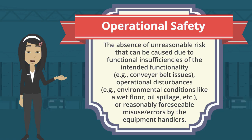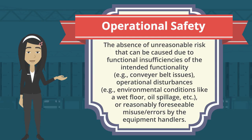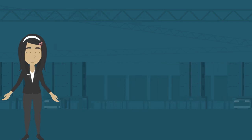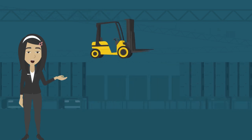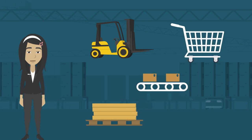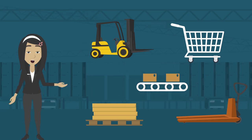Examples of operational safety concerns include conveyor belt issues, operational disturbances such as environmental conditions like a wet floor or oil spillage, and reasonably foreseeable misuse errors by equipment handlers. The equipment that falls under operations includes industrial trucks, trolleys, conveyor belts, pallets, hand pallet trucks, etc. Let us see how to safely handle this equipment in FC and MH.